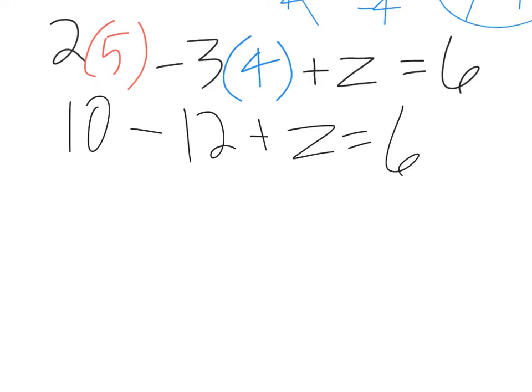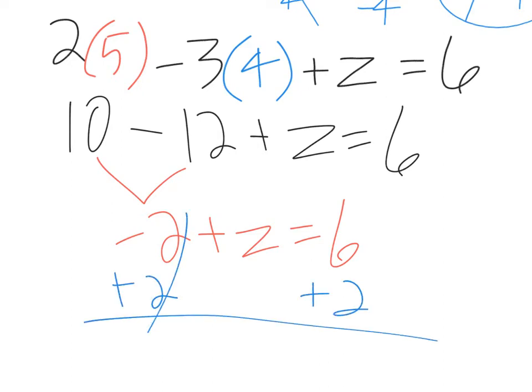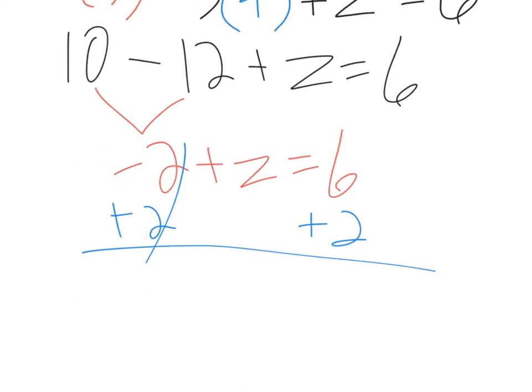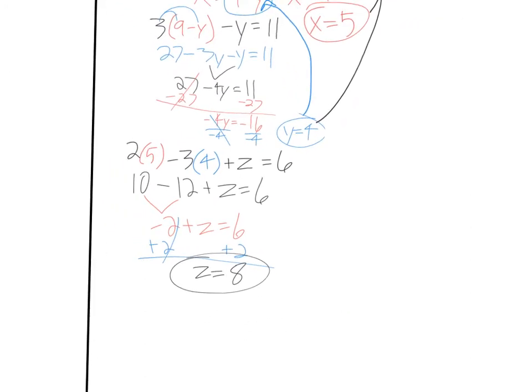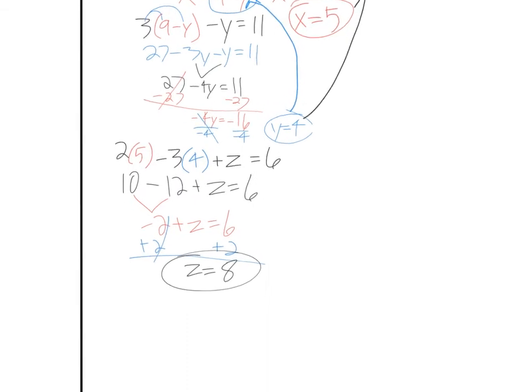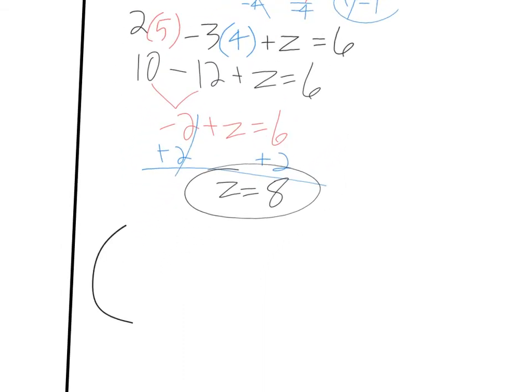Do 10 minus 12, that's going to get you negative two, plus z equals six. Again, negative two plus z does not combine because they need to have the same letter in common. So take that two and add it to the other side. And then you're going to get z equals eight. So I've gotten my three answers now. x is five, y is four, z is eight.